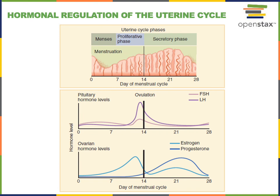The uterus is regulated by the steroid sex hormones estrogen and progesterone, which fluctuate over roughly a 28-day cycle. The cycle begins with menstruation — the shedding of the uterine lining or endometrium. Following menstruation, increasing levels of FSH stimulate the ovarian follicles to produce estrogen, and estrogen stimulates the growth of the endometrium during what's known as the proliferative phase of the uterine cycle.